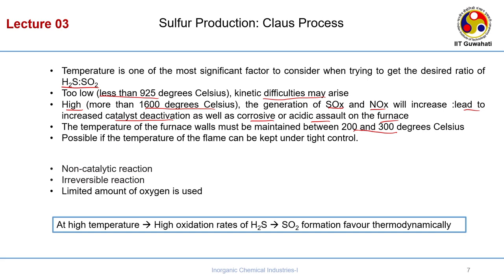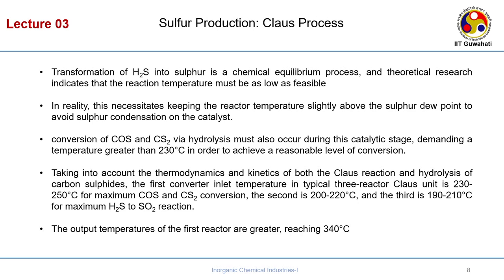The temperature of the furnace walls must be maintained between 200 to 300 degrees Celsius, which is possible if the flame temperature is kept under tight control. The first reaction is a non-catalytic, irreversible reaction with a limited amount of oxygen. At high temperature, high oxidation rates of H2S favour sulphur dioxide formation thermodynamically. Theoretically, the reaction temperature must be kept as low as possible for better H2S-to-sulphur conversion.